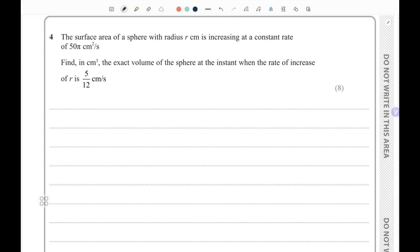The rate is 50π cm² per second, so I can clearly say this is my area rate of change of area. It's given. Find, in cm³, the exact volume of the sphere when the rate of increase of the radius is given.